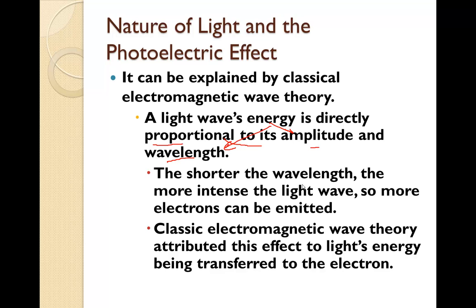The shorter the wavelength, the more intense the light. So, the shorter, the more intense. So, more electrons can be emitted.